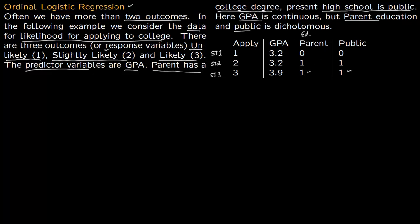We want to build a model where you feed in three predictors — parent education, whether the high school is public, and GPA — and get the probability of outcomes 1, 2, or 3: unlikely to apply, slightly likely to apply, or very likely to apply. The model outputs the corresponding probabilities given the student's GPA, whether their parent has a college education, and whether they study in a public school.